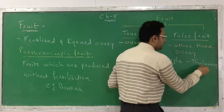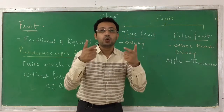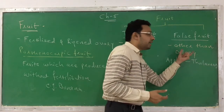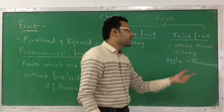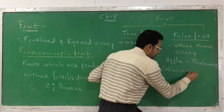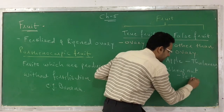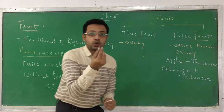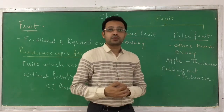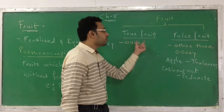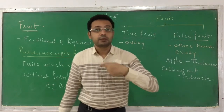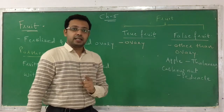The apple develops from the thalamus, not the ovary, which is why we call it a false fruit. The thalamus is the lower part of a flower which is slightly swollen or expanded. Another example of a false fruit is the cashew nut, which develops from the pedicle — the stalk-like portion of a flower. Since it does not develop from the ovary, it is also a false fruit. So the two types of fruit are true fruit (develops from ovary) and false fruit (develops from parts other than ovary), with apple and cashew nut as examples of false fruits.